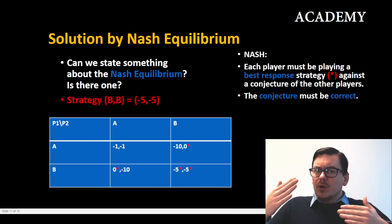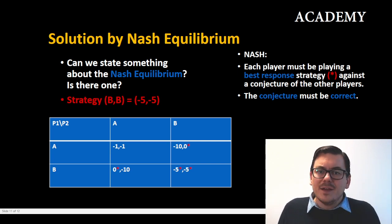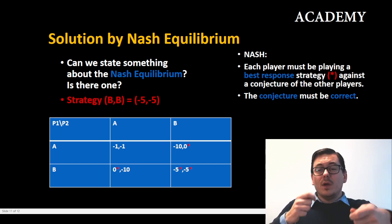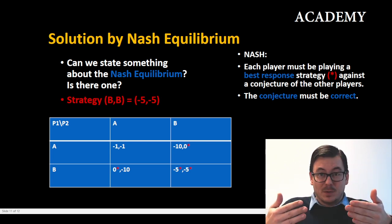Now we have to go back to the Nash equilibrium because we have the rules up here and they say each player must be playing a best response strategy. We mark that by the stars against a conjecture of the other players. So we know how the other players play and our best response against the best response.